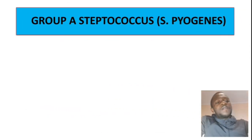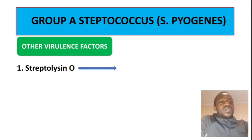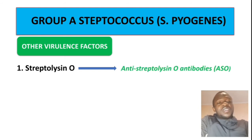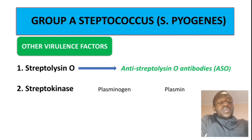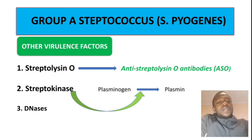Now let's talk about the other virulence factors. First, streptolysin O — this is very important because after infection with Streptococcus pyogenes, we can detect anti-streptolysin O (ASO) antibodies. These titers confirm that a patient has been infected with Streptococcus pyogenes. The second virulence factor is streptokinase, an enzyme which converts plasminogen into plasmin. The third virulence factor is DNAses.